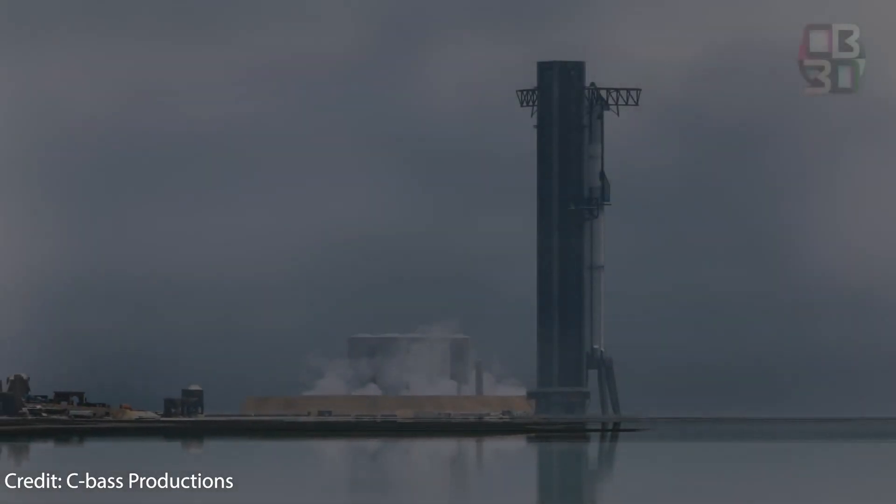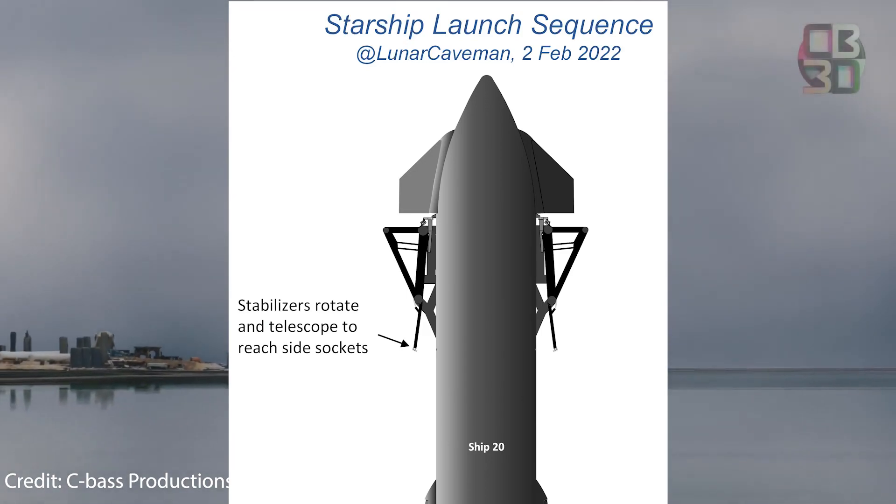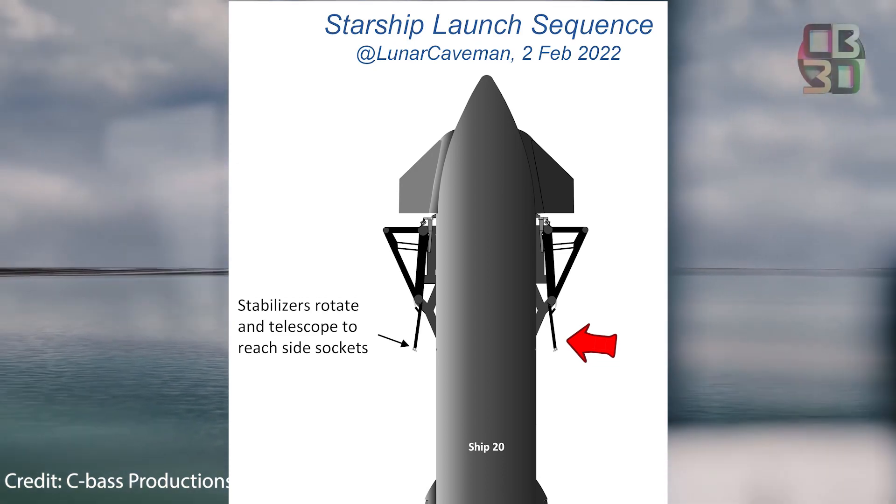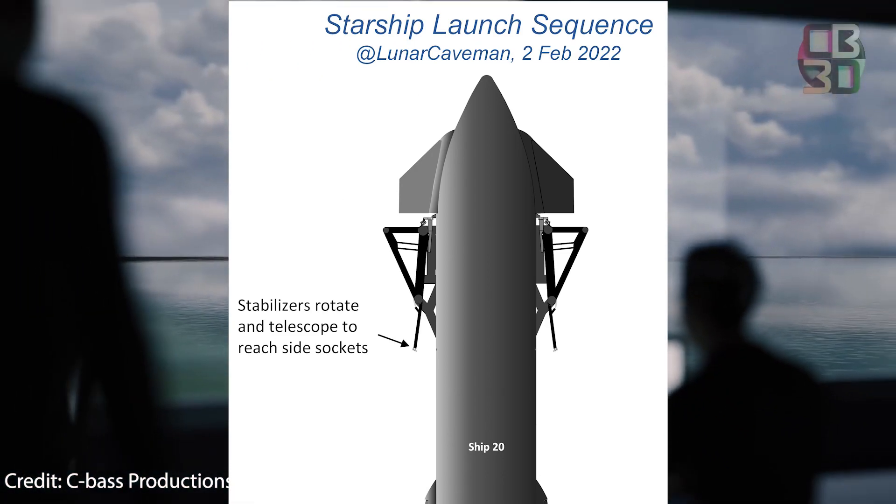Once Starship is ready to launch, the chopsticks, including the stabilizers to the sides, which up until this moment have been holding and helping stabilize the ship in place, will proceed to open up to their maximum range at 113 degrees.